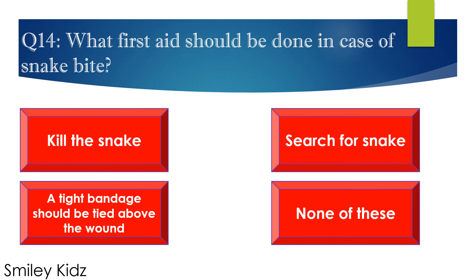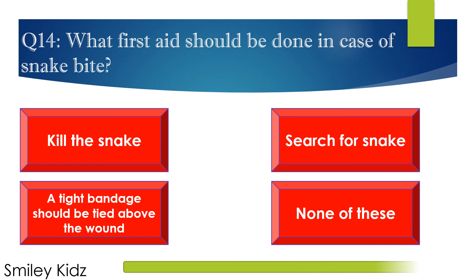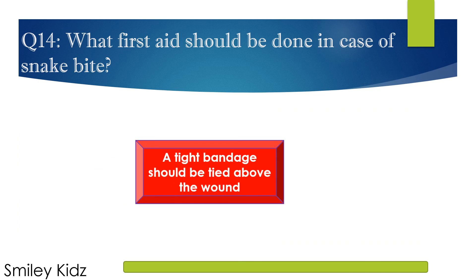Question number 14. What first aid should be done in case of snake bite? Options are A. Kill the snake, B. Search for snake, C. A tight bandage should be tied above the wound, and D. None of these. Your time starts now. Your time is up. The right answer is: a tight bandage should be tied above the wound.